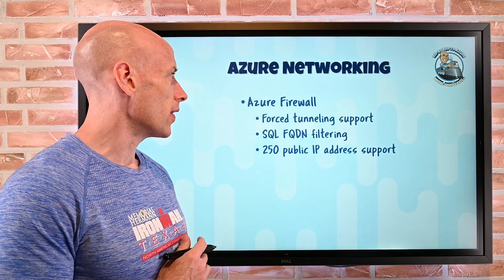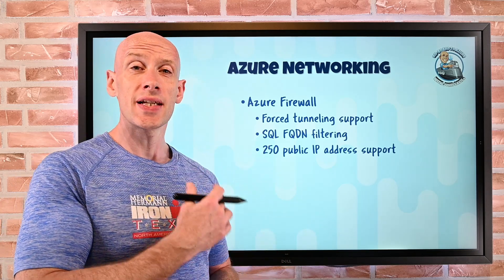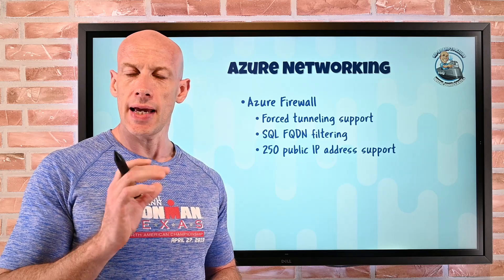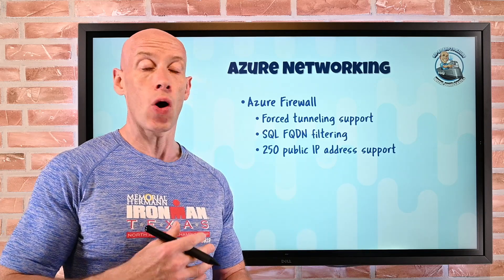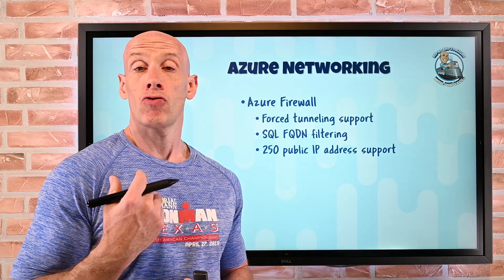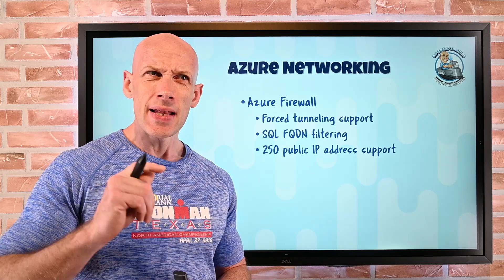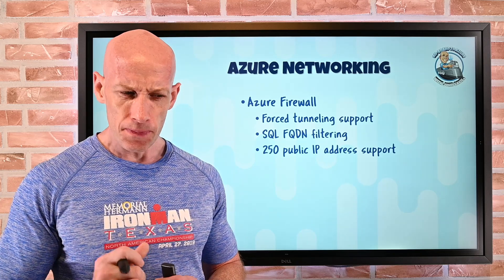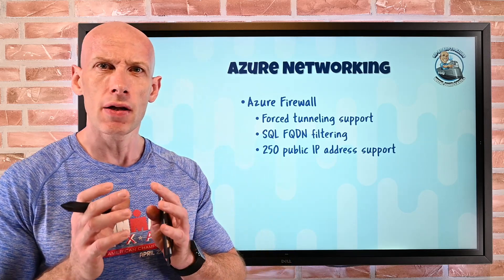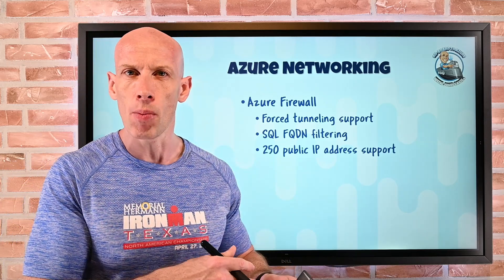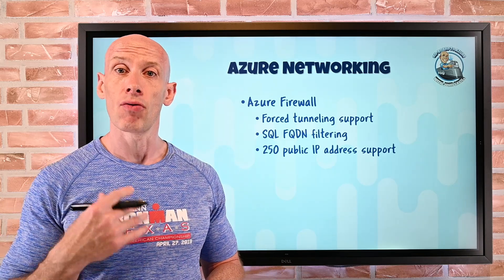On the networking side it's really focused on Azure Firewall. Firstly, we now have forced tunneling support. This enables you to take any traffic that might have gone to the internet and route it through to an on-premises firewall or another network virtual appliance on your network. There are some caveats — it does split out management traffic from customer traffic, because obviously you can't send management traffic down to an on-premises firewall or Azure will stop working. So it does split those out for you.